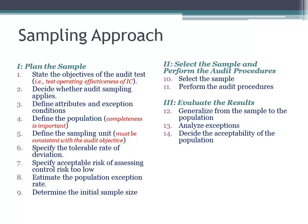Now you have to go ahead and actually perform the audit procedures and select the sample. If you're testing sales and controls over sales, you're going to look at items in the sales and collection cycle, such as the sales journal and shipping documents. You select the sample and perform your audit procedures on that sample. Typically, you'll select a sample and perform several audit procedures on it. For example, if you select a sample of sales from the sales journal, you can test occurrence, accuracy, and cutoff — several audit procedures on that one sample.